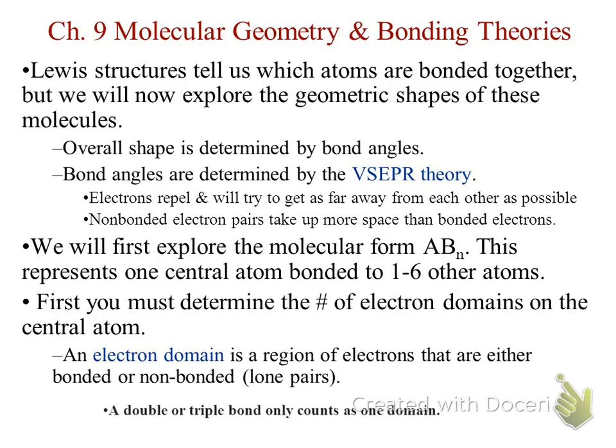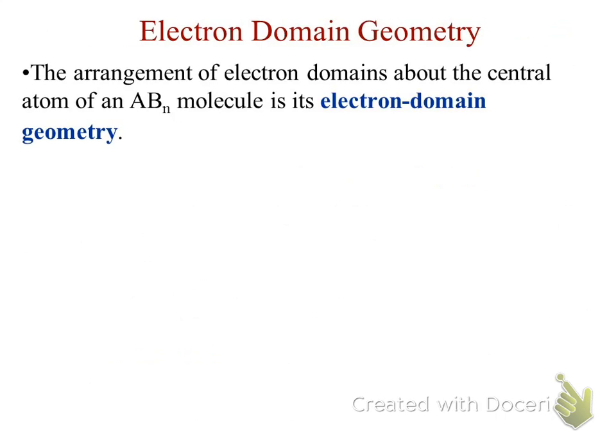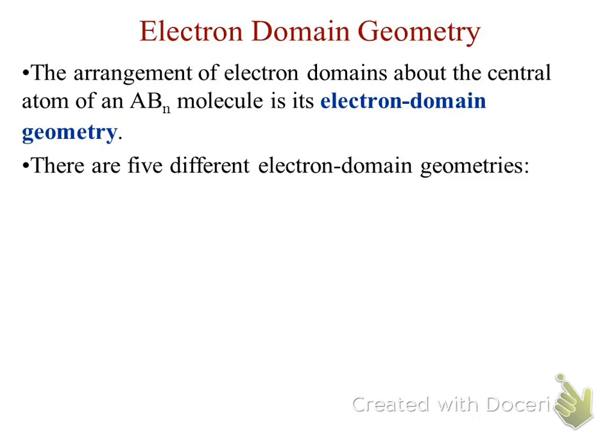Also, double or triple bonds only count as one domain, so that's just a little something to keep in mind. The arrangement around the central atom, in terms of an ABN molecule, is its electron domain geometry, or what we'll use as VSEPR shape. There are five different domain geometries that we're going to find.